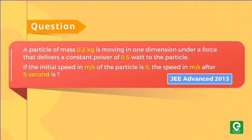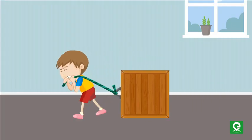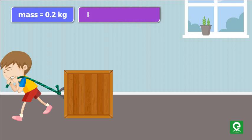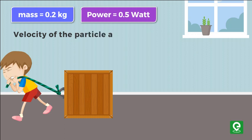JEE Advanced 2013 exam. In the question, we are given that the particle of mass 0.2 kg moves under a force that delivers constant power of 0.5 watt, and we need to find the velocity of the particle after five seconds starting from rest.